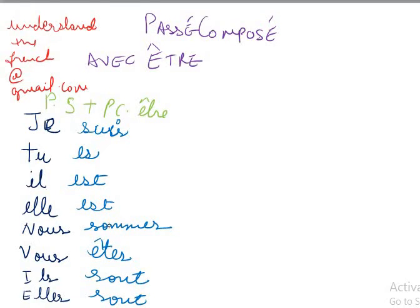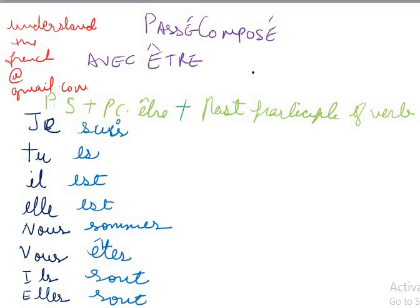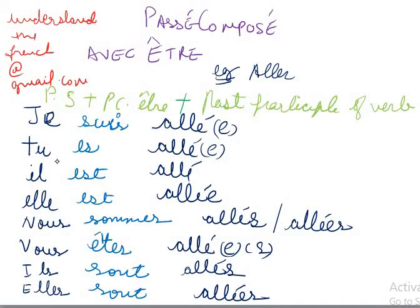The être conjugation is: je suis, tu es, il est, elle est, on est, nous sommes, vous êtes, ils sont, elles sont. If you do not know the present conjugation of être, please take a look at the link in the description box. Now adding the past participle of aller, it becomes: je suis allé, tu es allé, il est allé, elle est allée, on est allé, nous sommes allés, vous êtes allé, ils sont allés, elles sont allées.